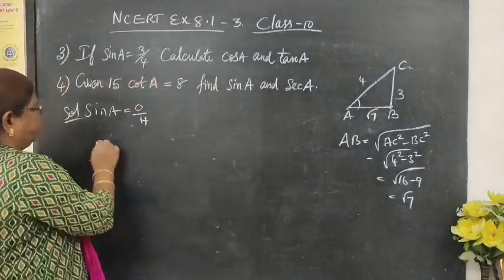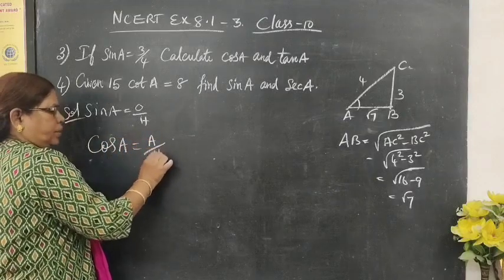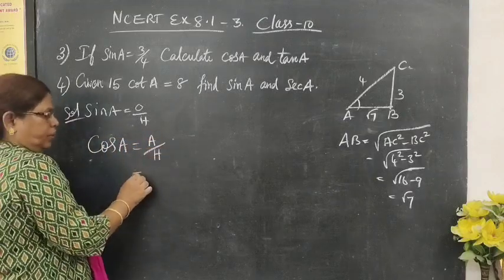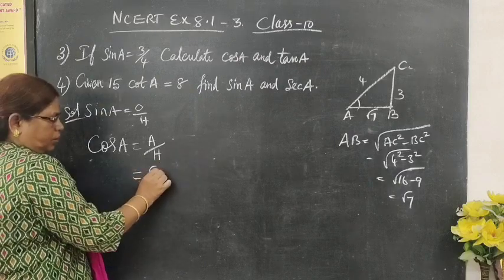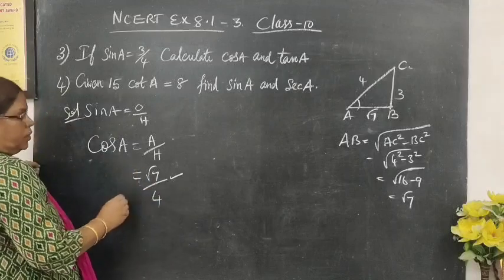We want to find cos A. Cos A formed in adjacent side by hypotenuse. So equal to what is adjacent side? Root 7, hypotenuse is 4. So this is the answer.